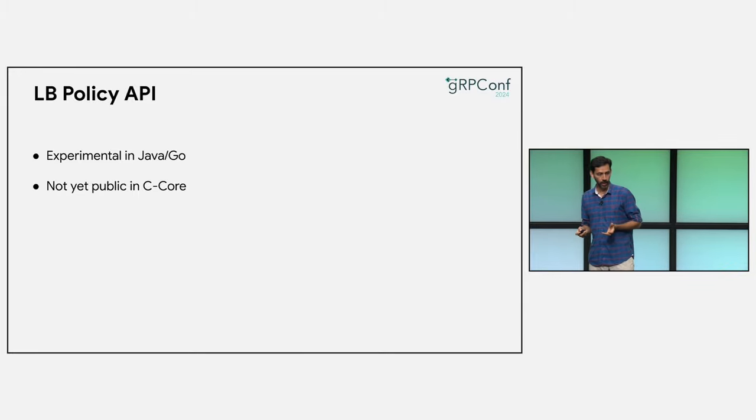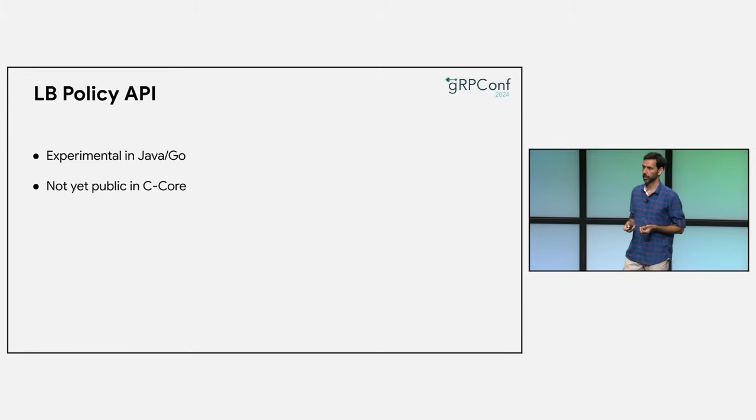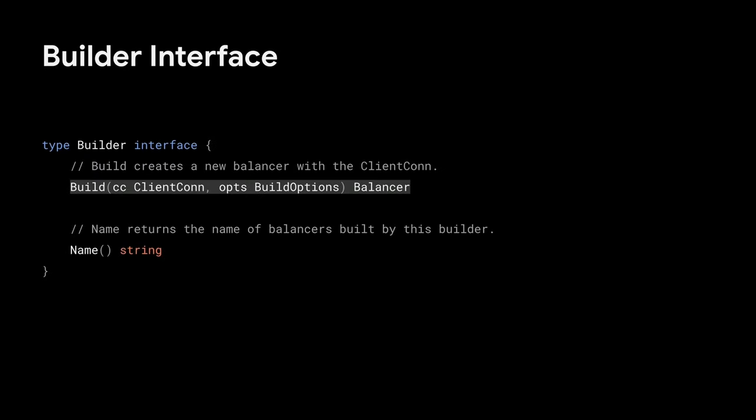Now let's look at the API. A note of caution: the API is experimental in Java and Go. You are free to use them, but they can change. It's not yet public in C core — it's blocked on the event engine migration, but we hope to make it public soon. We'll look at the gRPC Go API, which defines a bunch of interfaces. We'll start with the builder interface — this is the interface that every LB policy must implement and register with gRPC, and it's what gRPC uses to build LB policies at runtime. It has two methods: one to build the LB policy, and one to return its name.